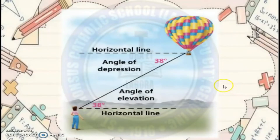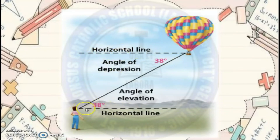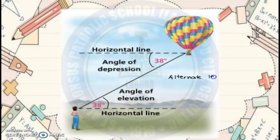Generally speaking, if there's a lady looking up at a hot air balloon, and there's a person inside that balloon also looking at the lady, with their respective horizontal lines, we could say that the angle of elevation and the angle of depression are congruent because they are alternate interior angles. You learned the concept of alternate interior angles in grade 8 — alternate interior angles are always congruent.